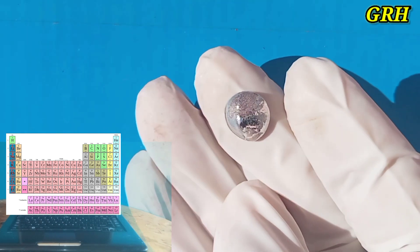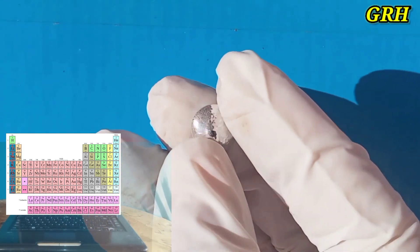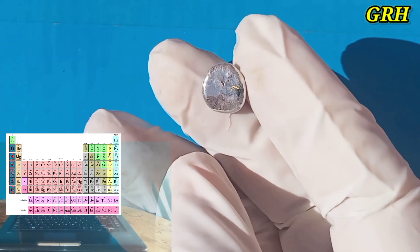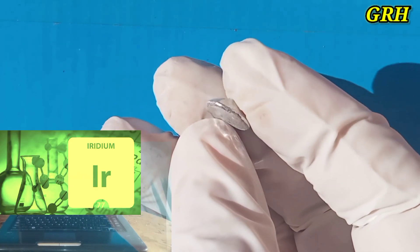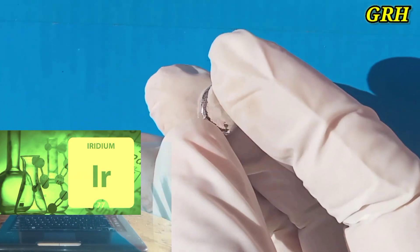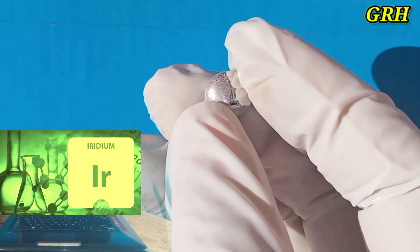A very hard, brittle, shiny, silvery looking metal from the PGM family. Iridium is one of the rarest elements on our planet, approximately 40 micrograms per ton of rock or sediment.